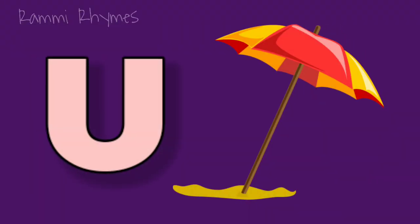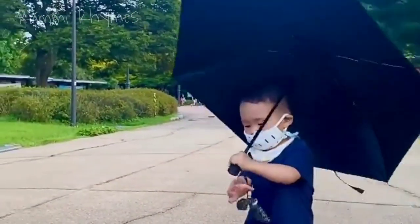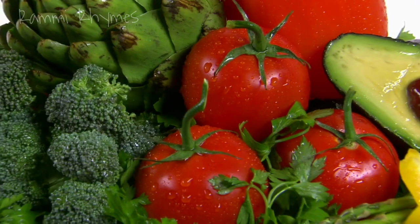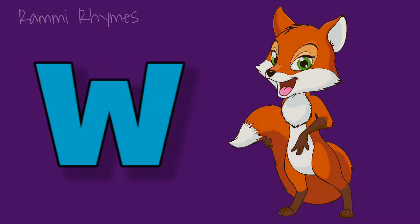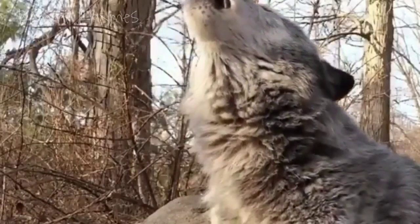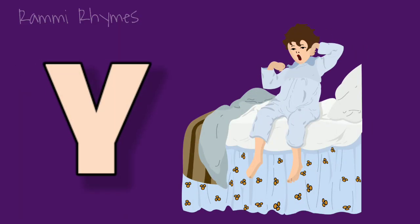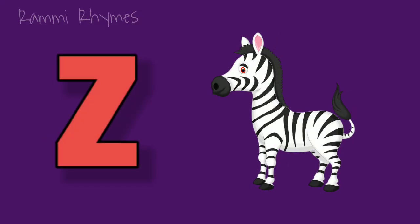U is for umbrella. B is for vegetable. W is for wolf. X is for x-ray. Y is for Jan. Z is for Zebra.